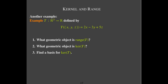Here's another example. We have a linear functional where the input space is R3, the output space is R1, or we could just consider it as the real numbers. We're given a formula instead of a matrix, and we're asked: what geometric object is the range of T? What geometric object is the kernel of T? And find a basis for the kernel of T. By geometric object, I mean: is it a point, a line, a plane, or something bigger?